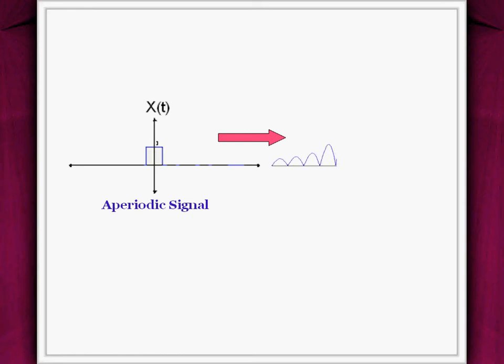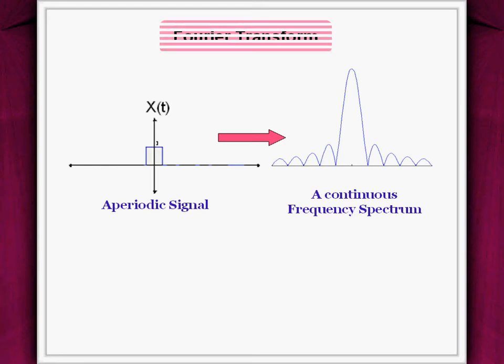The frequency spacing in the spectrum is reduced to zero, making it a continuous spectrum. This is actually called the Fourier transform.